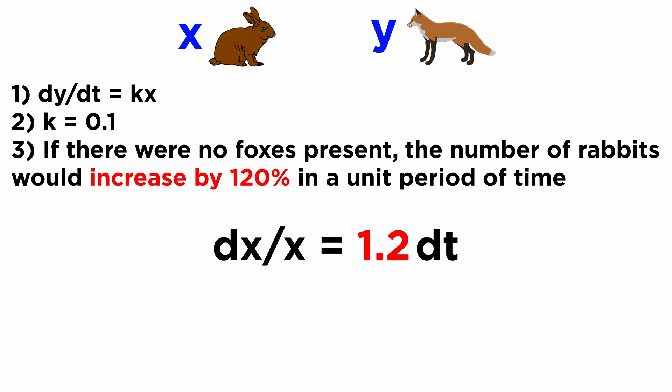We should interpret this as a fractional increase rather than an absolute increase in the quantity. Therefore, dx over x is equal to 1.2 times the finite time interval dt, which we can rearrange to give dx/dt equals 1.2 times x.